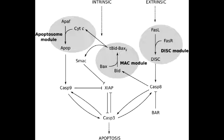Name a common pro-apoptotic protein. A common pro-apoptotic protein is BAX. Name a common anti-apoptotic protein. A common anti-apoptotic protein is BCL2.